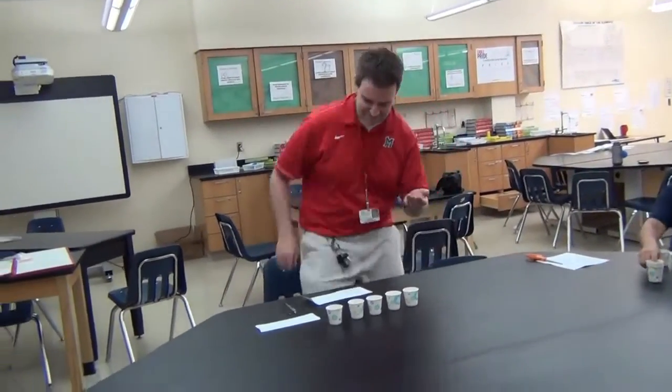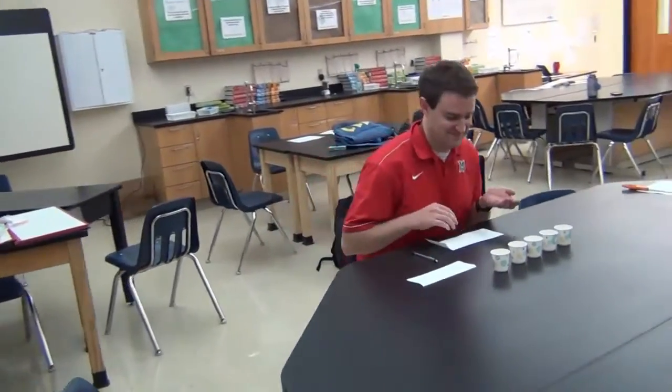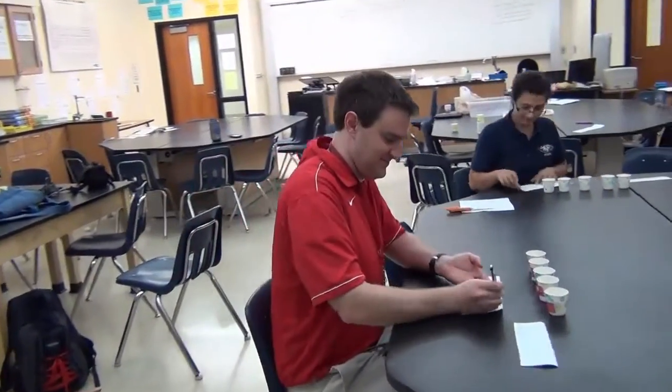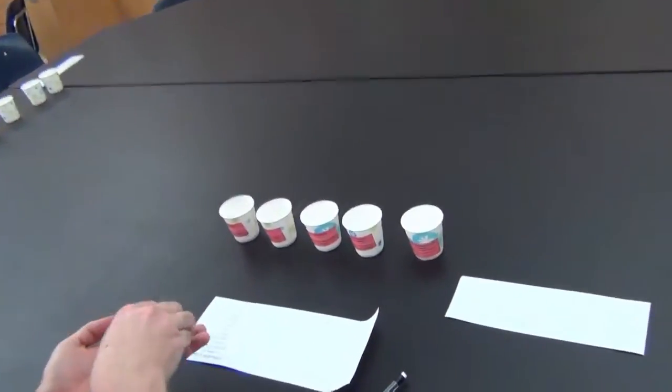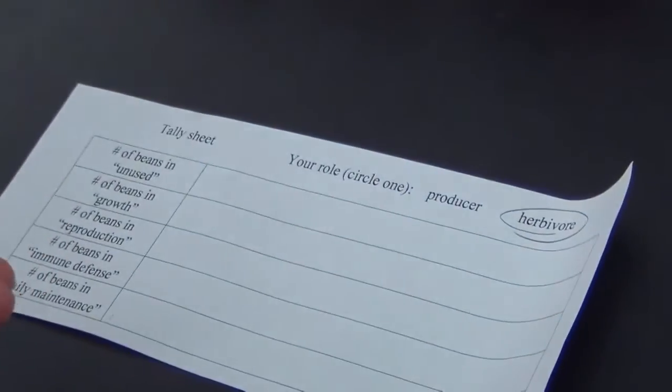Okay, so let's follow me now, the herbivore. I just grabbed 10 beans from the plant growth cup. And as it turns out, herbivore pairs will have their own set of five cups as shown here. You'll also have your own tally sheet to fill out.